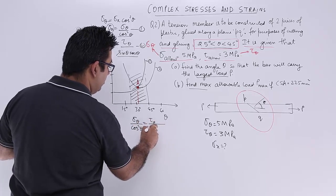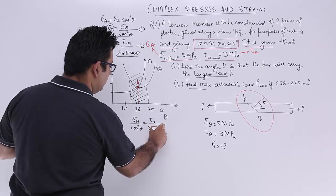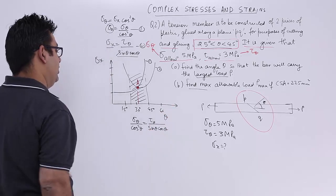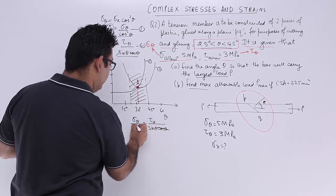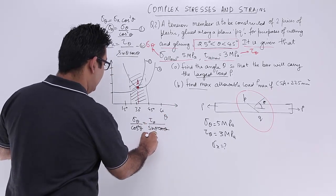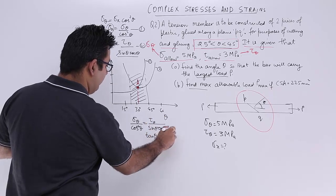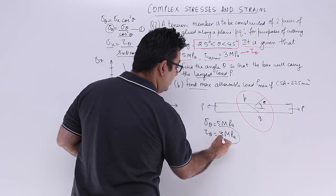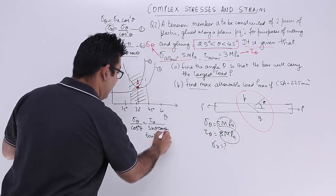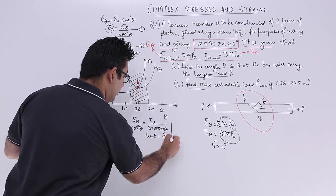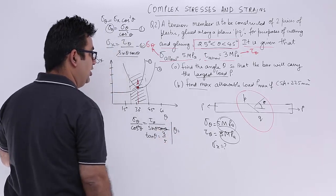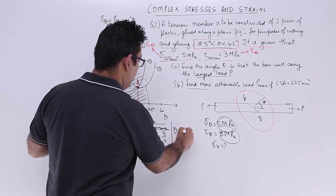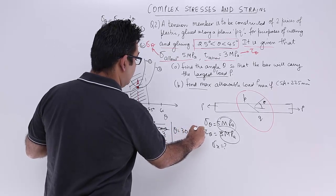Let us move forward and equate these two equations. You will have sigma theta upon cos square theta equals tau theta upon sin theta cos theta. I can strike off this and this. So tan theta would equal tau theta upon sigma theta. What is tau theta? 3 upon 5.